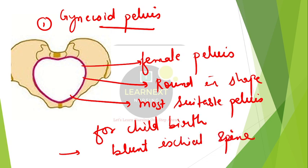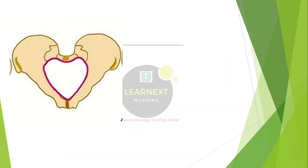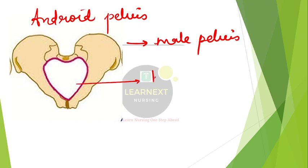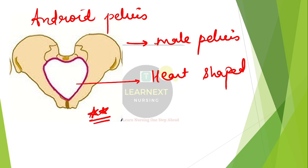The second type of pelvis is the android pelvis. The android pelvis is called the male pelvis. Its shape is heart-shaped, and a very important point related to the android pelvis is that it has prominent ischial spines.